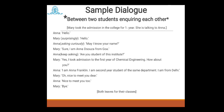You can also use italics to write emotions in a slanting way so that you immediately realize what emotions the speaker possesses. Anna asks curiously, 'May I know your name?' Mary replies, 'Sure, I am Anna D'Souza from Goa.' Anna keeps asking, 'Are you a student of this institute?' Mary: 'Yes, I took admission to the first year of chemical engineering. How about you?' Anna: 'I am Anna Franklin. I am a second year student of the same department. I am from Delhi.' Mary: 'Oh, nice to meet you dear.' Anna: 'Nice to meet you too.' Mary: 'Bye.' And I close these dialogues with an exit statement in square brackets: 'Both rushed for their classes.' If you follow this method and these steps, you will get complete marks.